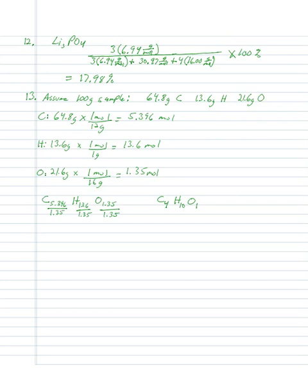If a value comes out to something like 3.5 after dividing, multiply everything by 2 to get whole numbers. For example, C3.5 H10 O1 would become C7H20O2. The fractions should be simple — halves, thirds, or quarters.